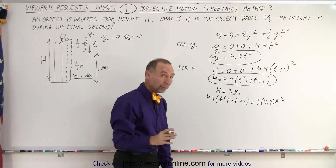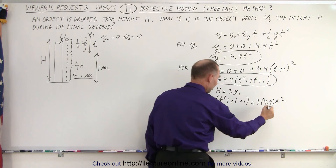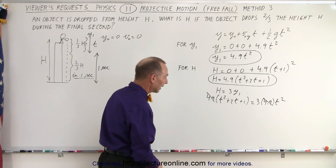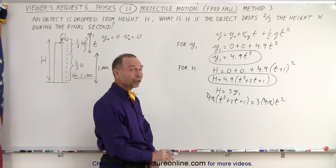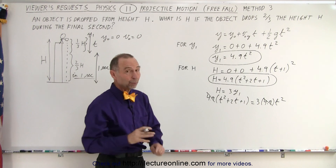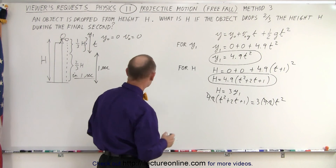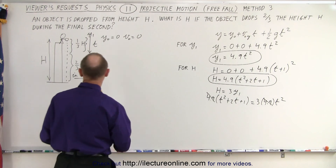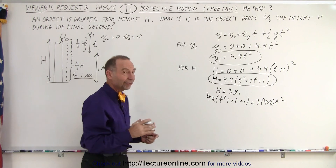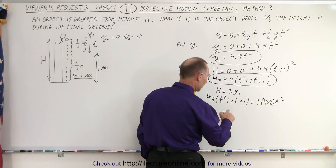Right away we can see that 4.9 cancels out on both sides. We now have a quadratic equation in t that we can solve. Moving everything to one side gives us: 0 equals 3t squared minus 2t minus 1. Once we solve for t, we can find the total time t plus one second, and then the total distance.